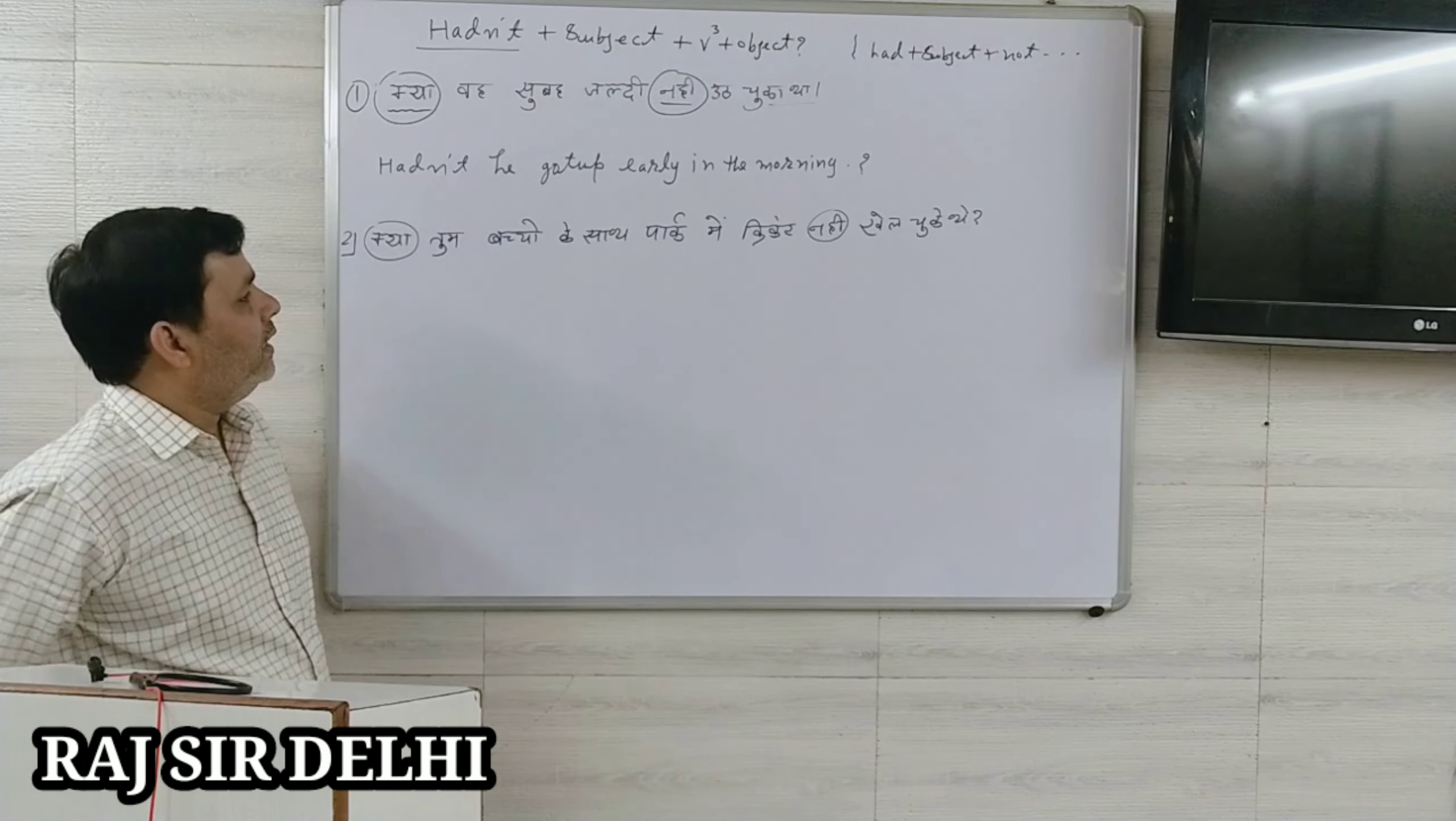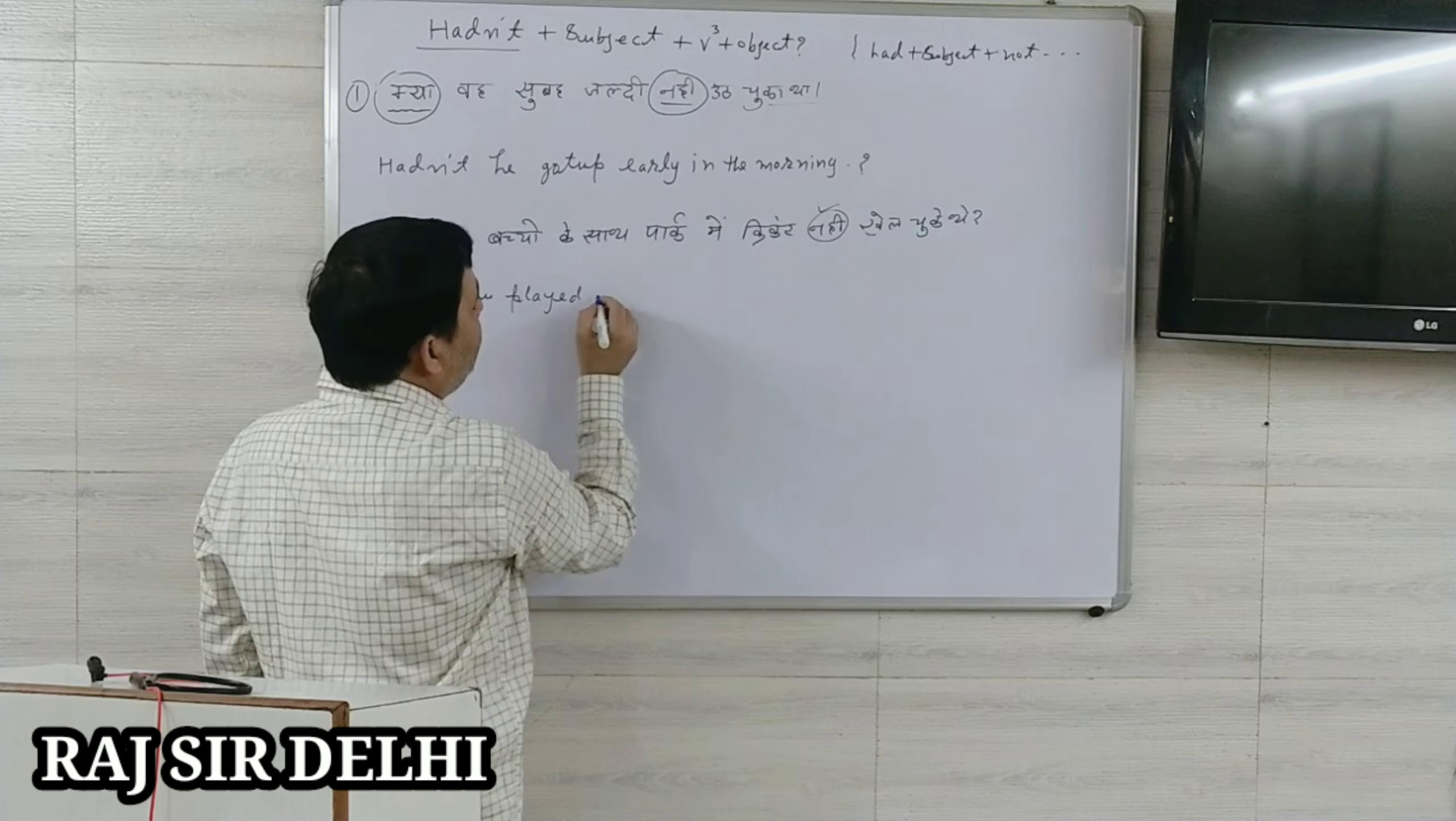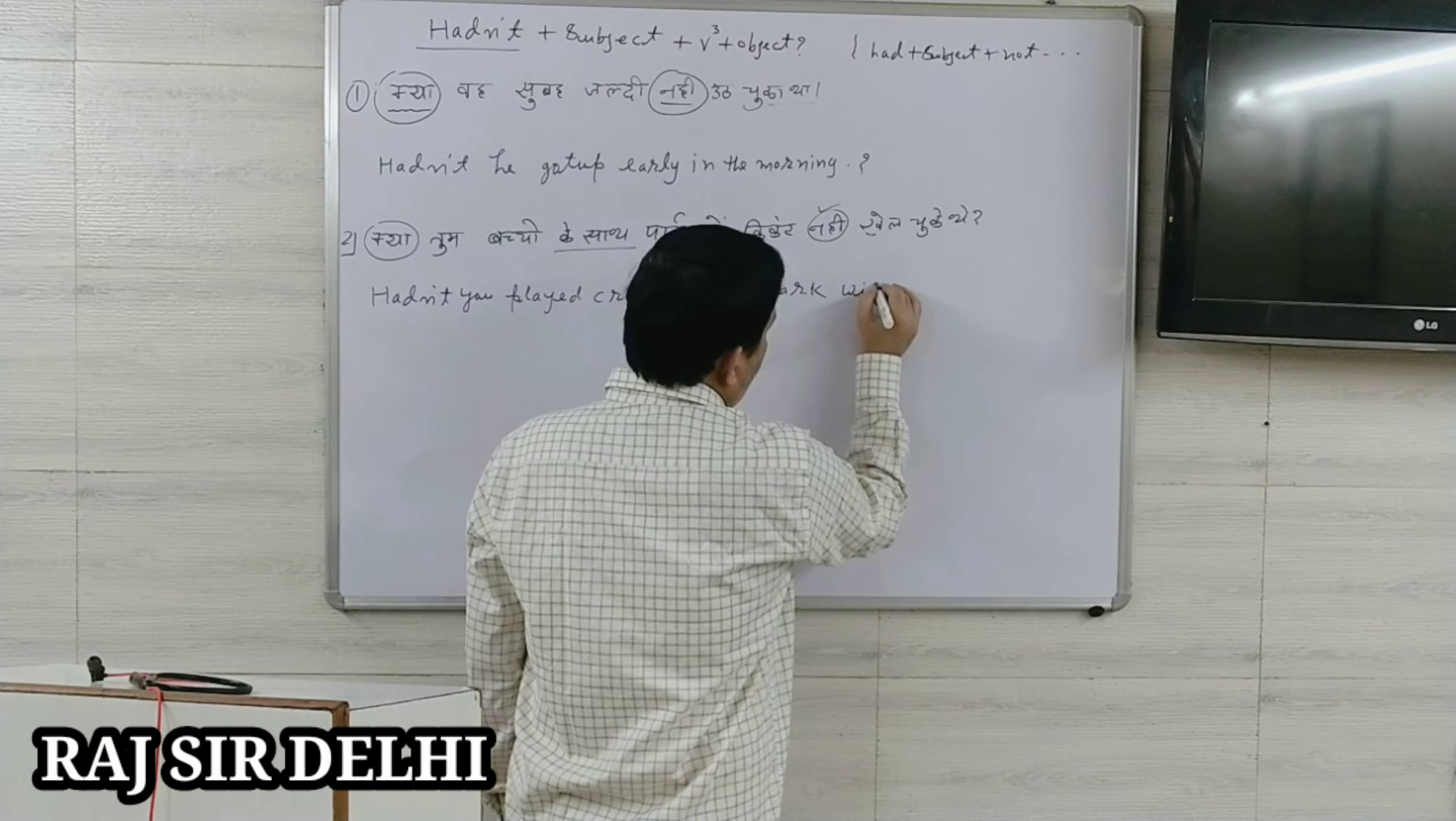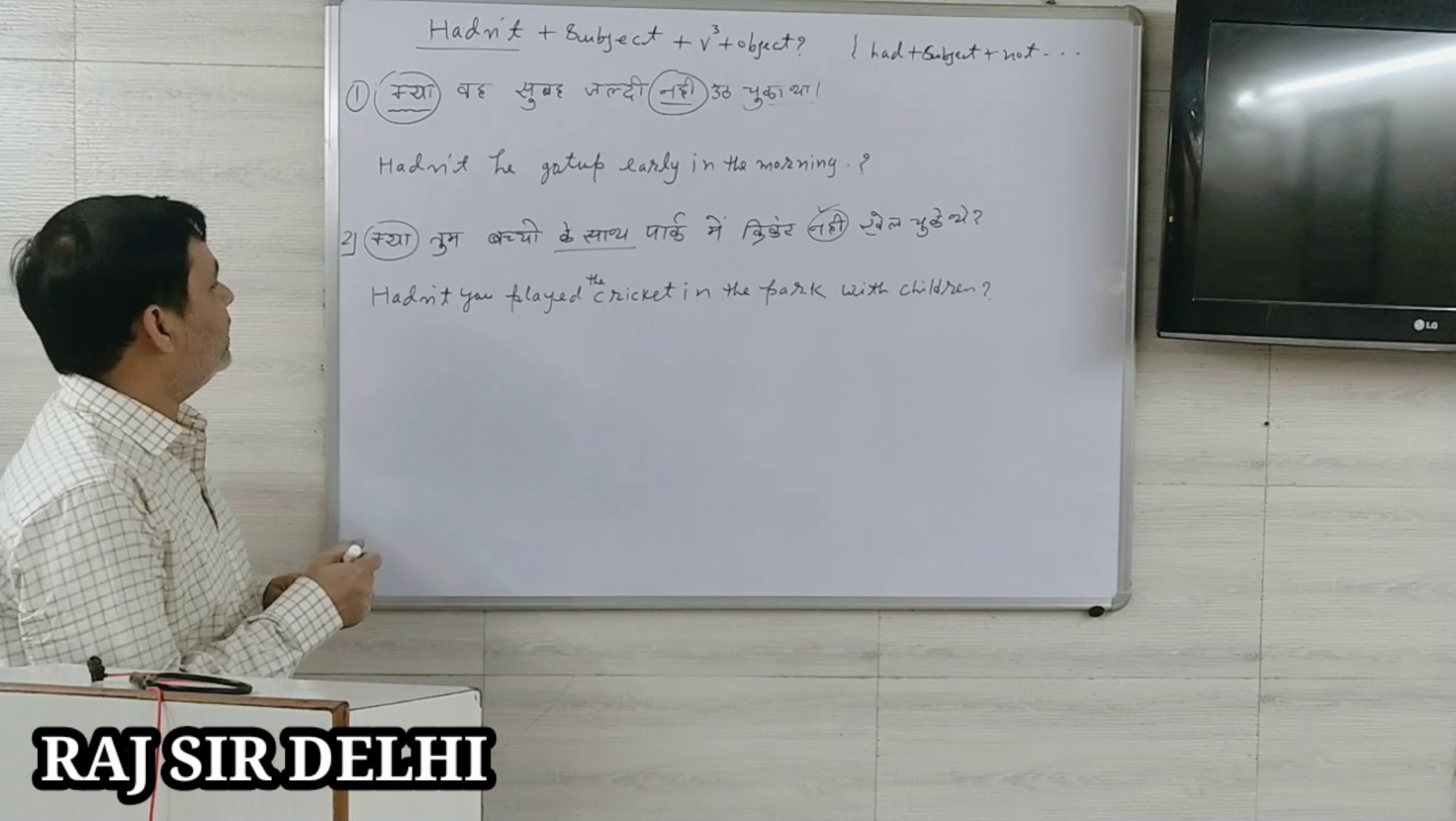When we come together, then we have not. So this is interrogative plus negative. We have to write hadn't you. And the last question: Who played cricket in the park? Played. Last main question mark. So our sentence is ready. I have translated Hindi to English. Hadn't you played cricket in the park with children? This is our complete sentence.